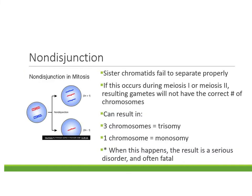Going back to chromosomes, remember mitosis and meiosis — each half of a chromosome is called a sister chromatid. Sometimes those sister chromatids don't separate properly during mitosis or meiosis. When this happens, it's called non-disjunction: sister chromatids fail to separate properly. If this occurs during meiosis one or meiosis two, it causes your gametes to have the incorrect number of chromosomes — you could end up with three chromosomes in your offspring, called trisomy, or just one chromosome, called monosomy.